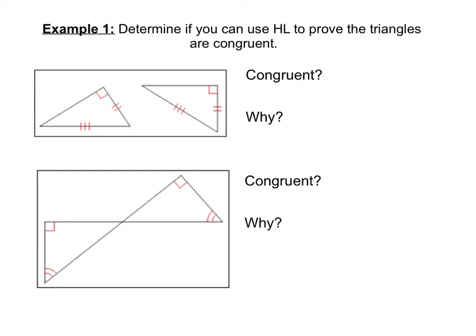In example one, we're going to determine if you can use HL to prove the triangles are congruent. The first thing you have to check for is that you have right triangles. I can see here in our first example that both of those triangles have that 90 degree angle symbol.